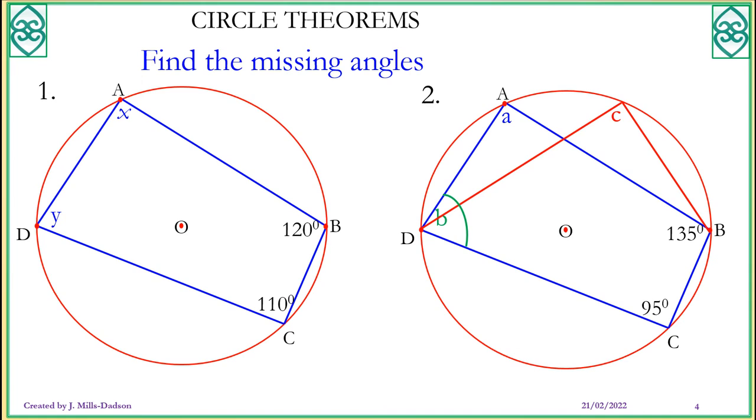Now pause the video and see if you can work out these missing angles. Okay, let's start. This is a cyclic quadrilateral because all the four corners touch the circumference. So we just have to look at opposite angles. 110 and X are opposite, they must add up to 180. So 110 from 180, X is now 70 degrees. Y and 120 opposite, they add up to 180. 120 from 180, 60 degrees.